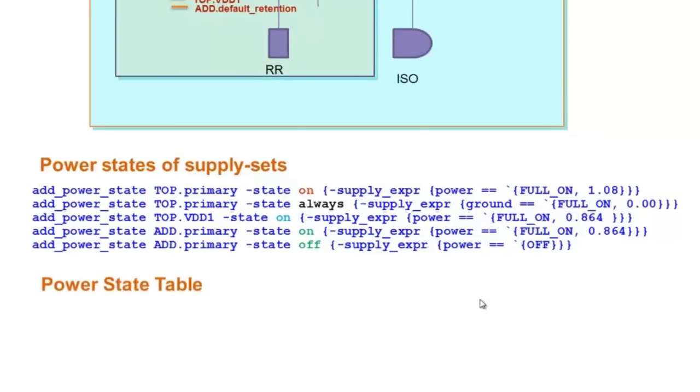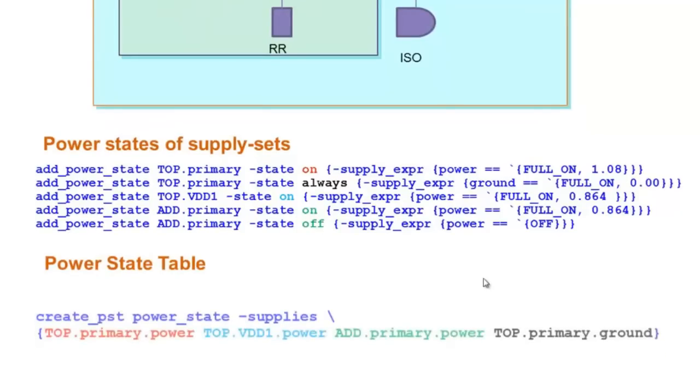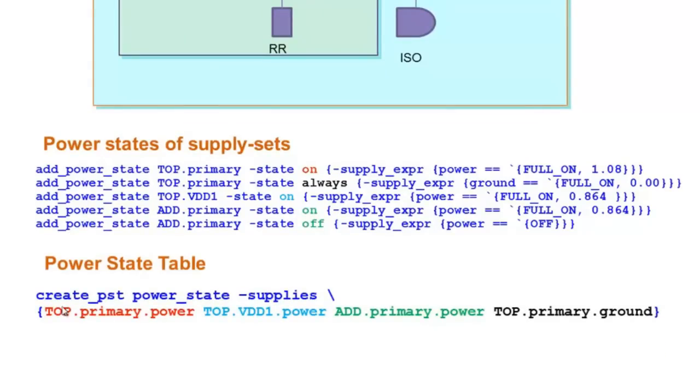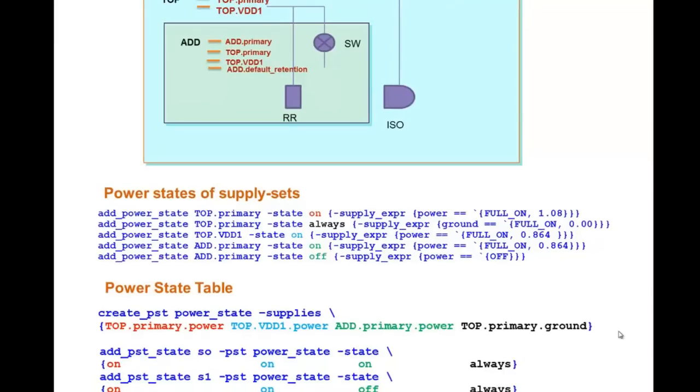The second portion is to create the PowerState table. First using the CreatePST and in the Supplies list we provide all the SupplySet functions. And then we define the PowerState table using AddPST state.